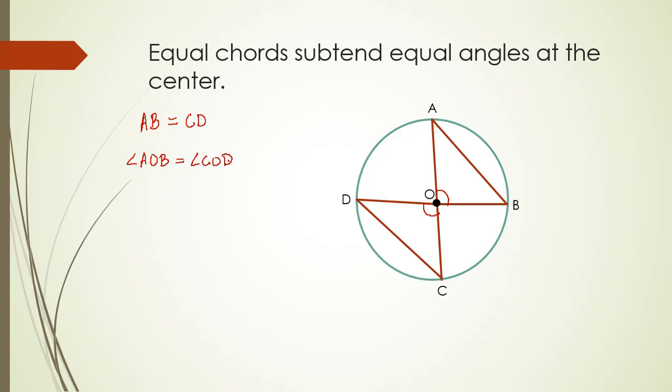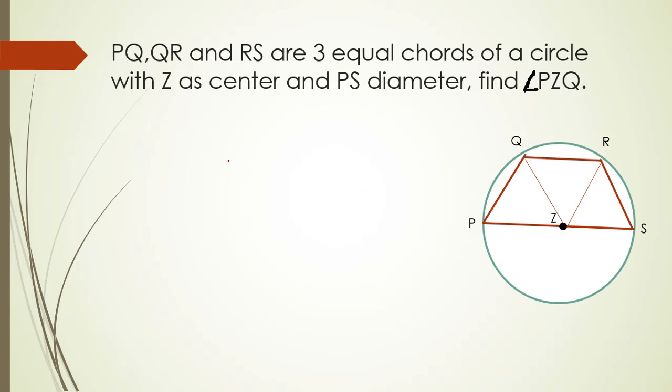Let's use this theorem in a problem. PQ, QR, and RS are three equal chords of a circle with Z as center and PS as diameter. We have to find angle PZQ. At this point I would like to request you to please pause the video and try to solve the question on your own, and come back to check your answer.